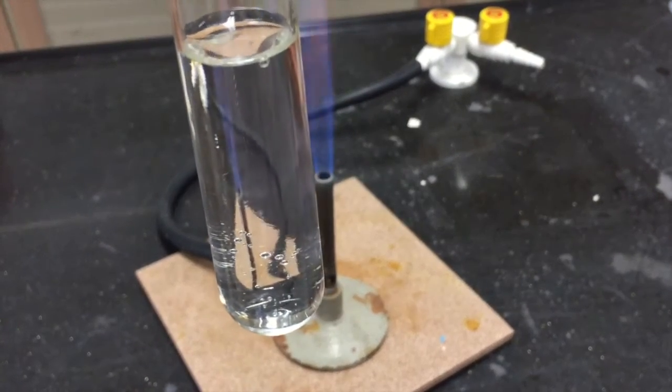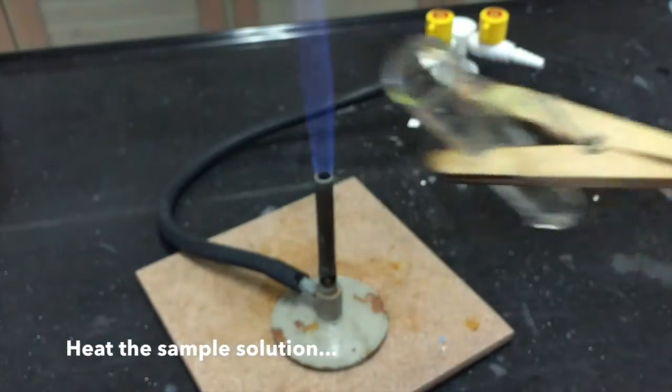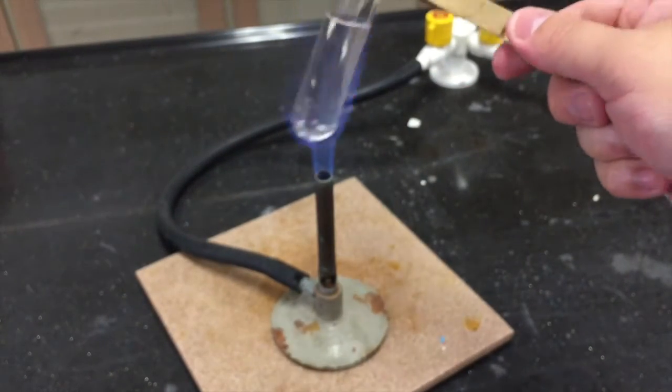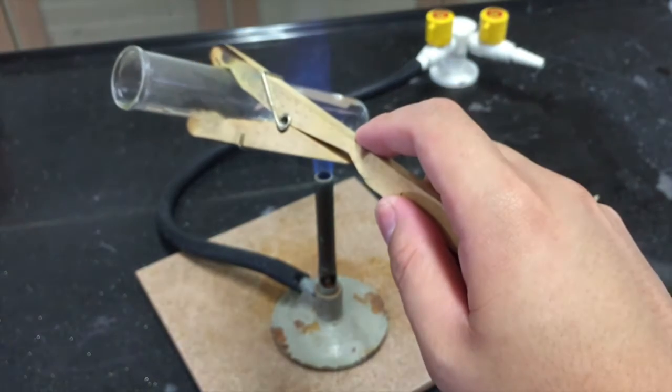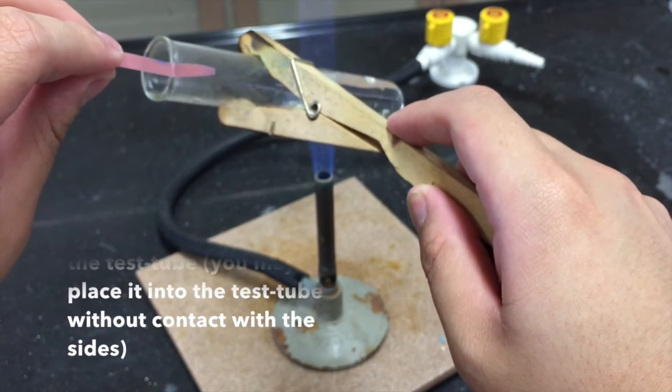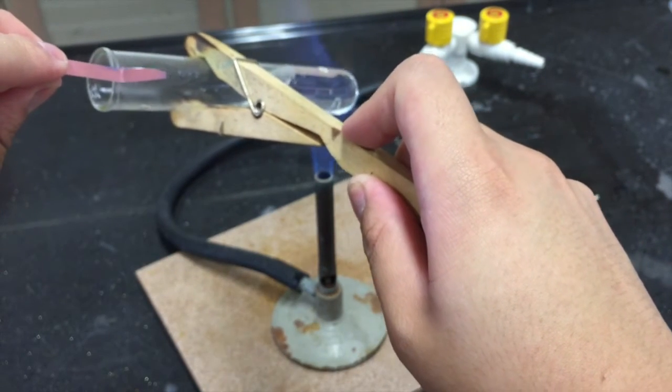As soon as you have added the sodium hydroxide solution, heat the solution sample. As you heat the solution sample over the Bunsen flame, immediately hold the moist red litmus paper over the mouth of the test tube.